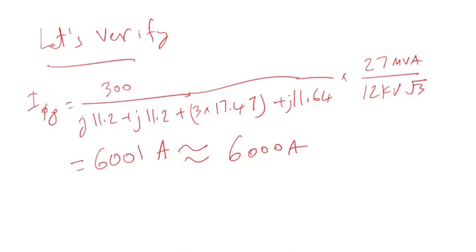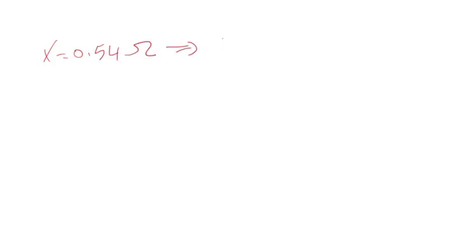Hello and welcome to Engineering Simple. In this video series we learned a couple of things: one, how to calculate the line-to-ground fault imposed on the low voltage side of a transformer. We calculated the fault current in the example to be 11,000 amps, then we wanted to limit the fault current to 6,000 amps. We proceeded with two options — option one, we added a neutral grounded reactor and calculated the reactance of that reactor to be 0.54 ohms.